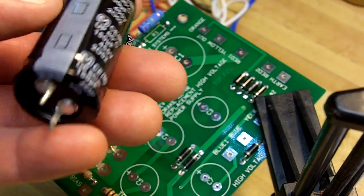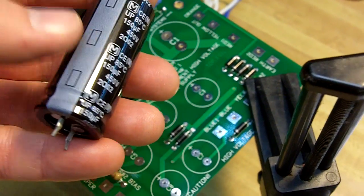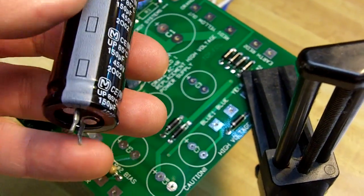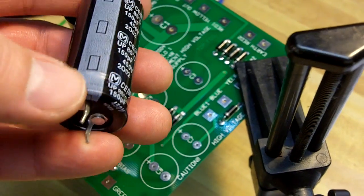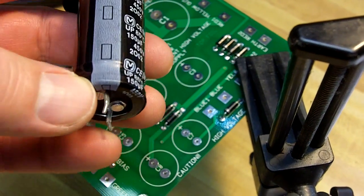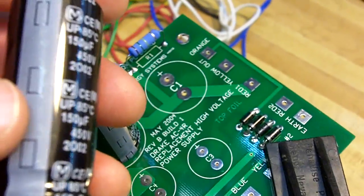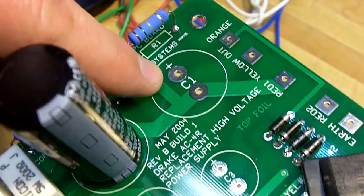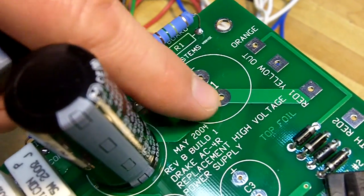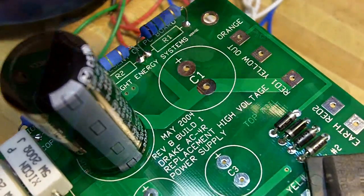These are electrolytic style capacitors and they are polarity sensitive. You'll see this is a minus symbol here on that lead, so that's the negative side. They always have to be installed correctly. It's usually labeled on the board. You'll see the plus sign here, so the minus side has to go there.